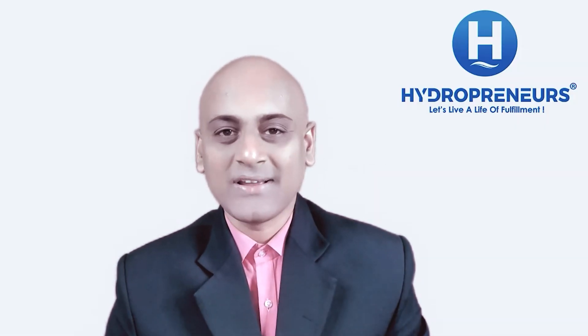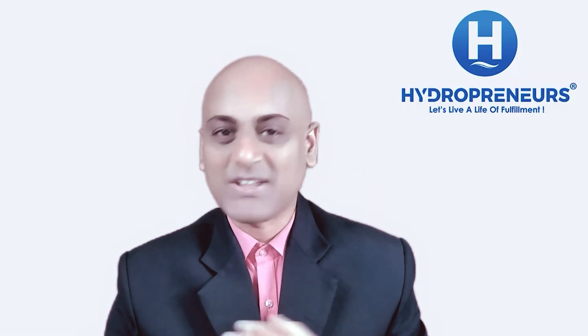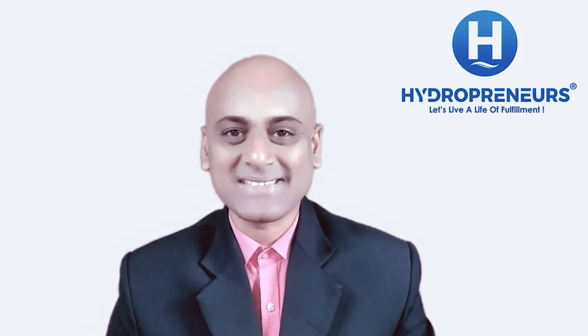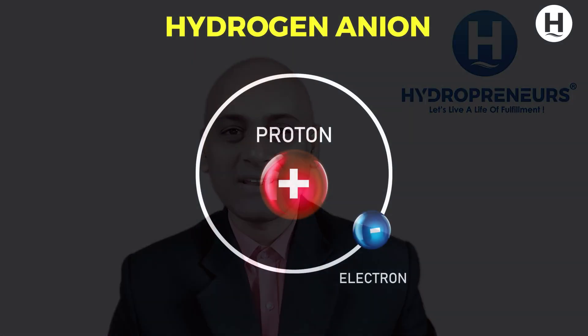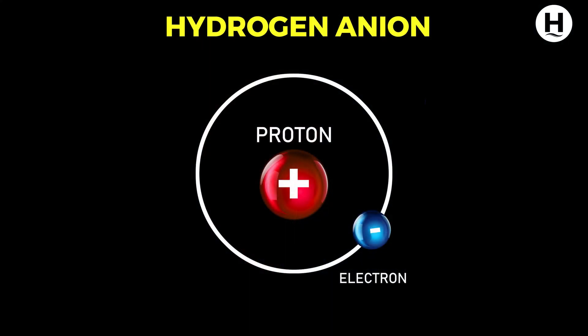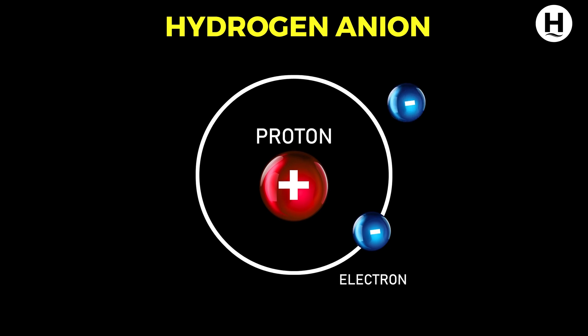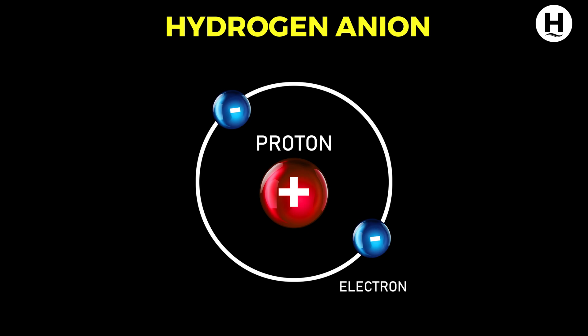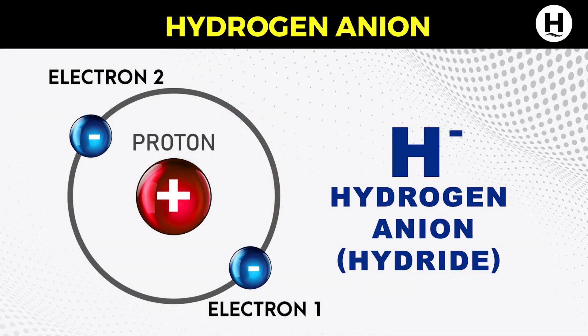There is another ion that the majority of people have no idea about — that is the hydrogen anion. Since electrons are negatively charged, adding another electron to the hydrogen atom will make a hydrogen anion. This is also called a hydride.